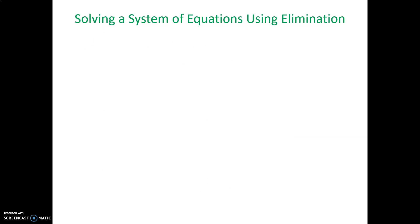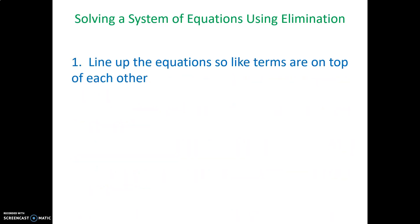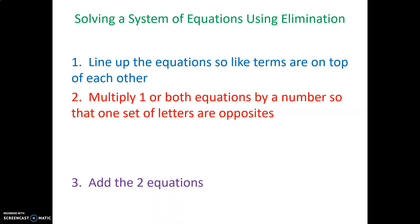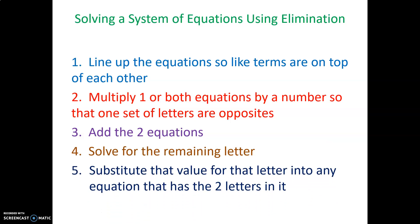The other way to solve a system of equations is by using elimination. You line up the equations so that like terms are on top of each other — x's over x's, y's over y's, equal signs aligned, and plain numbers aligned. Step 2: multiply one or both equations by a number so that one set of letters are opposites. Then add the two equations — the opposite letters drop out, leaving one-variable equation to solve. Once you know that letter's value, substitute it into any equation with both letters and solve for the remaining letter.